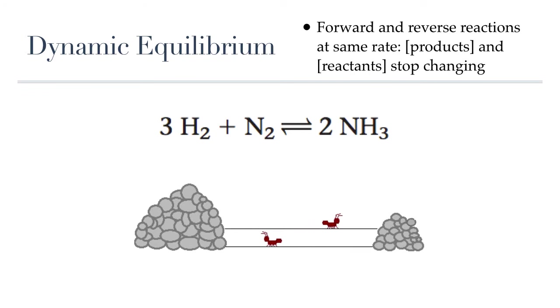By the way, often in science we use symbol shortcuts when writing out descriptions. The square brackets you see surrounding the words products and reactants actually mean concentration of. So from now on if you see anything written inside square brackets, you should read it as the concentration of whatever is inside the brackets. So for the definition I'm giving you here for dynamic equilibrium, it would read as forward and reverse reactions at the same rate, concentration of products and concentration of reactants stop changing.